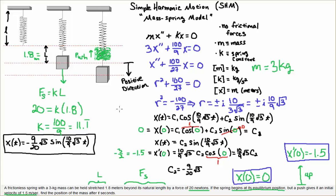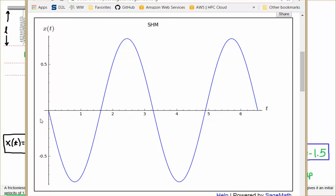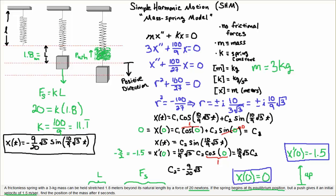If you chose up to be the positive direction for your coordinate system, then this solution would be positive and this graph would be flipped upward. You would start up in this direction and then come down to equilibrium. All right, good luck.